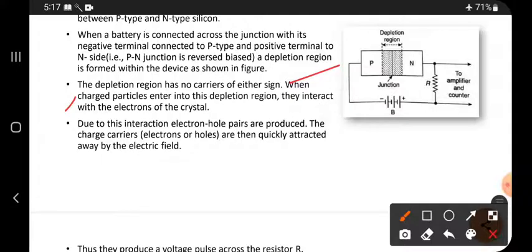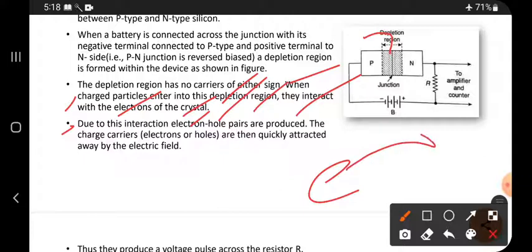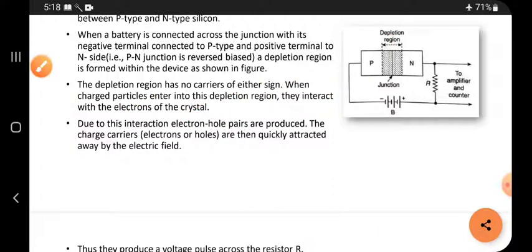When charged particles enter into this depletion region, they interact with the electrons of the crystal. When charged particles are coming and falling here, they interact with the electrons in the crystal. Due to this interaction, electron-hole pairs are produced. When an electron comes outside, a vacancy is present. That vacancy is called a hole.